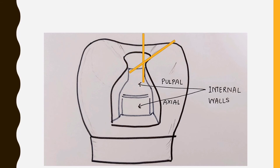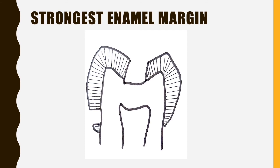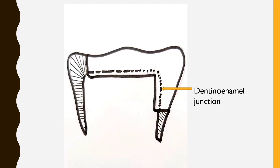The concept of the strongest enamel margin is really important in tooth preparation. In the diagram, the enamel margin is formed by full-length enamel rods whose inner ends lie on sound dentine. These enamel rods are also supported on the preparation side by progressively shorter enamel rods whose inner ends also lie on sound dentine. The strongest enamel margin results from a cavo-surface angle greater than 90 degrees. When this angle is less than 90 degrees, the enamel rods are unsupported — they don't lie on sound dentine — and this type of enamel margin tends to fracture easily.